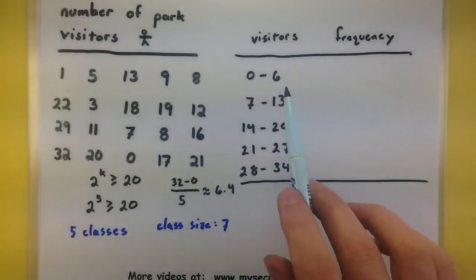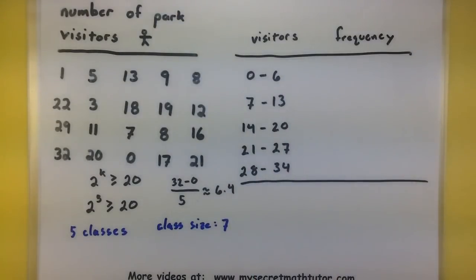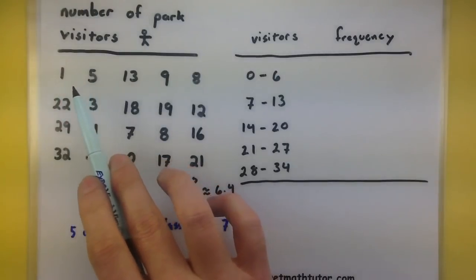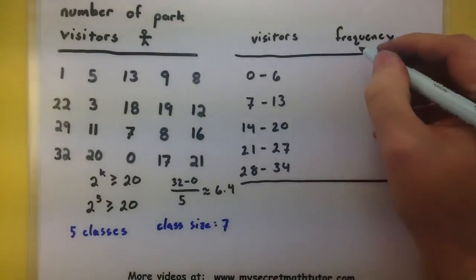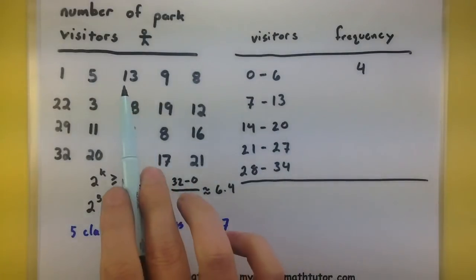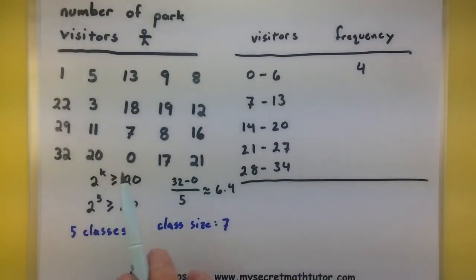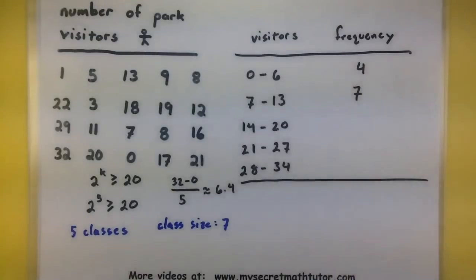Now for the frequency, I have to see how many of my data values fall into this class. And so we can start to count them up. So let's see, 5 is in there, 1 is in there, 3, 0. So I have 4 in the first class. Next class, a whole bunch of them, anywhere between 7 and 13. So 13, 9, 8, 12, 11, 7, 8, 7.